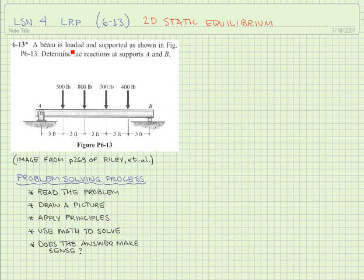As we look at this problem, we notice that the beam is loaded and supported as shown. We will notice that at this end we have a pin support and at B we have a roller support. We'll come back to those two terms in just a moment. What we're asked to find are the reactions at both A and B. That is our task. So we have read the problem.